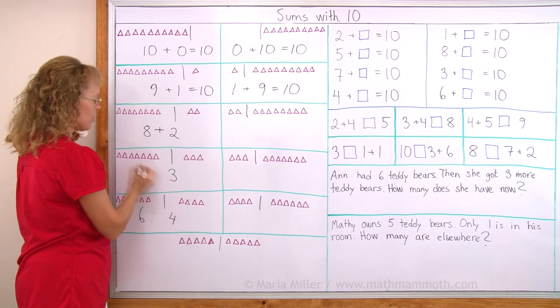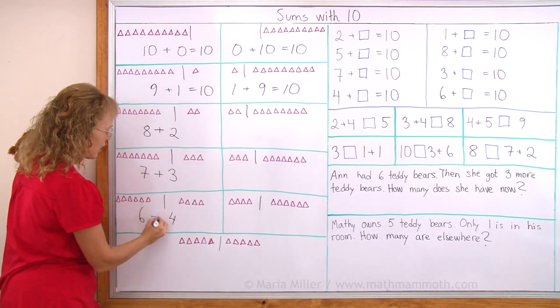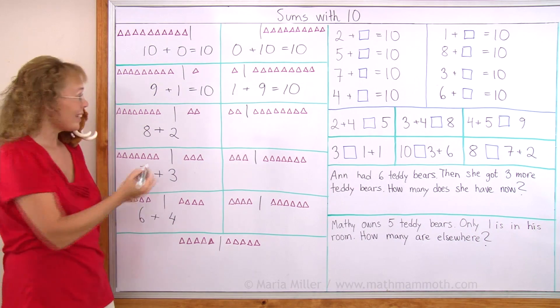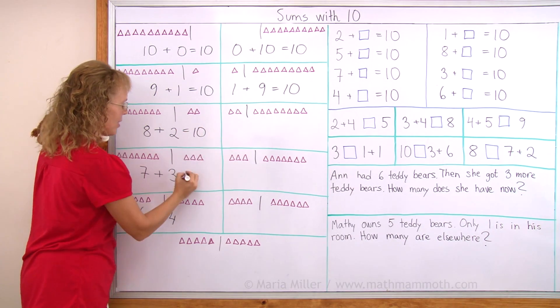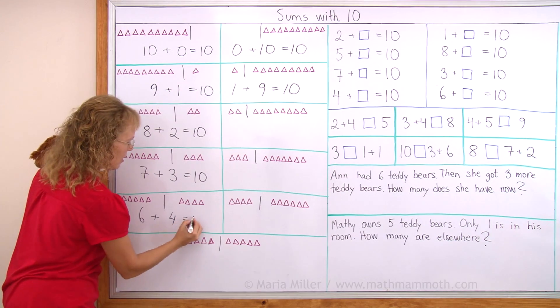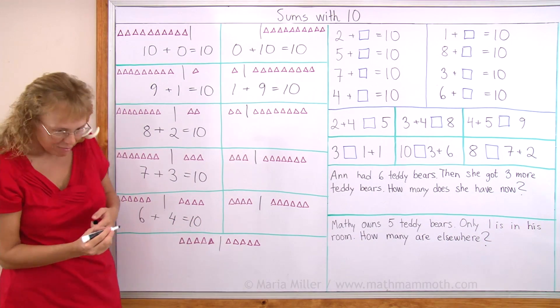So 8 plus 2, 7 plus 3 and 6 plus 4 all make 10. 10, 10, 10. Right Matthew? Right. He says 2.